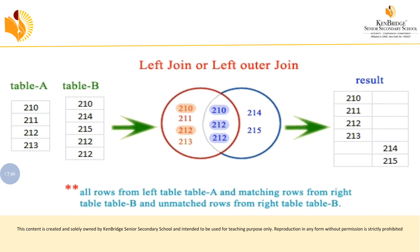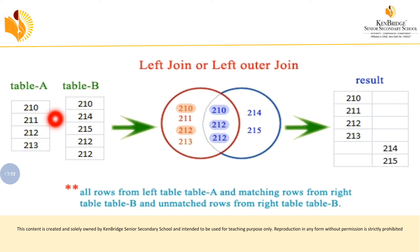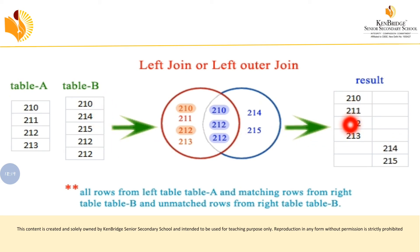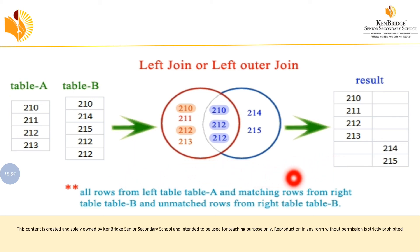Here is the pictorial representation of left join using table A and table B. Table A has values 2.10, 2.11, 2.12, and 2.13 — all of these will be displayed in the result. Only 2.10 and 2.12 are common with table B, so they are joined. Values 2.14 and 2.15 from table B are not common, so they appear as null. All rows from the left table and matching rows from the right table are shown.